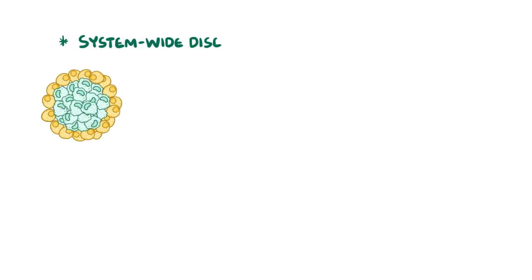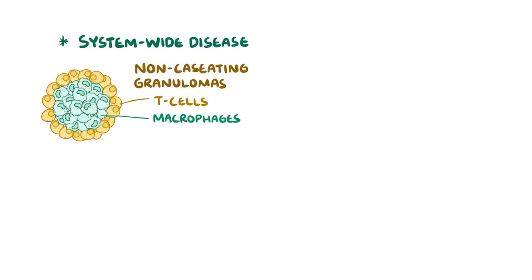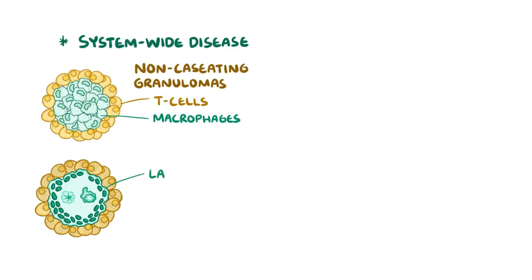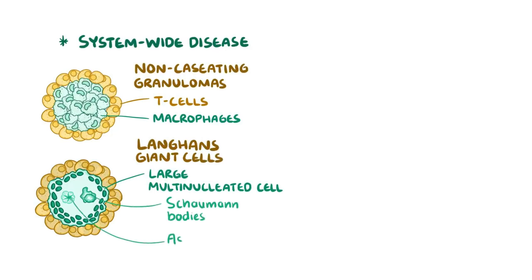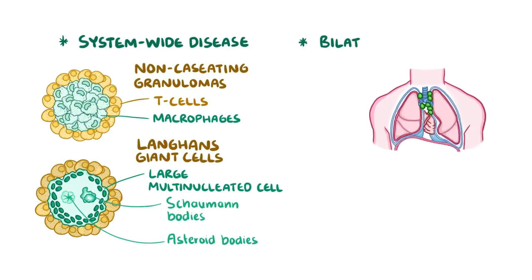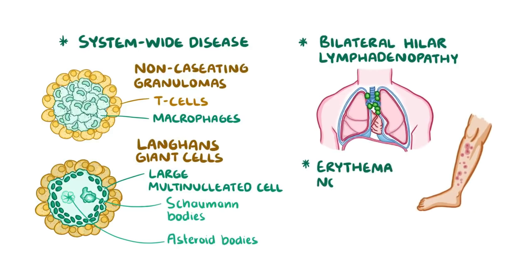So that's sarcoidosis. Sarcoidosis is a system-wide disease with non-caseating granulomas. These have T cells on the periphery and macrophages in the centre. Sometimes there are large multinucleated cells called Langhans Giant cells, which contain Schaumann and asteroid bodies. In most cases, individuals develop bilateral hilar lymphadenopathy, erythema nodosum, and have elevated levels of ACE, or angiotensin converting enzyme, as well as raised calcium levels. Fortunately, the disease tends to resolve spontaneously.